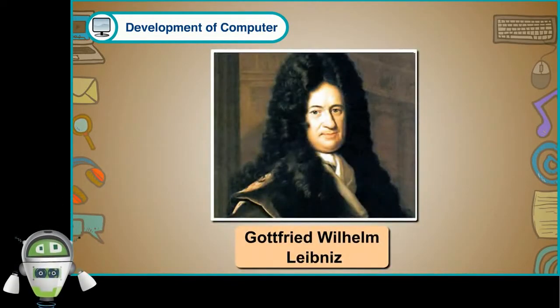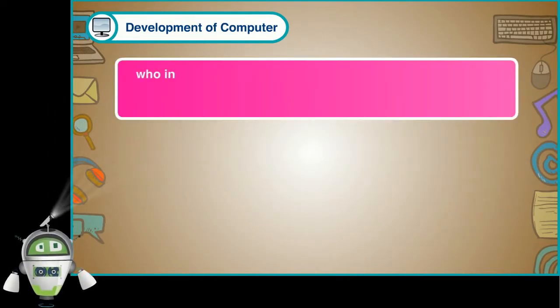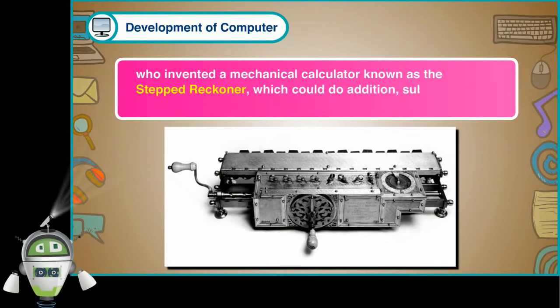Godfrey Wilhelm Leibniz. Godfrey Wilhelm Leibniz was a German mathematician who invented a mechanical calculator known as the stepped reckoner, which could do addition, subtraction, multiplication and division.